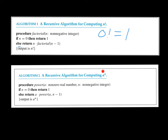Another recursive algorithm computes a raised to the n-th power. The procedure 'power' takes a, a non-zero real number, and n, a non-negative integer. If n equals 0, return 1, because any non-zero number raised to the 0 power is 1. Otherwise, return a multiplied by power(a, n-1). Try working through this for something like 2³ or 5³ — don't go crazy with large exponents or the by-hand calculations will get complicated. Then maybe try making a program that does this. And that's all for this section.